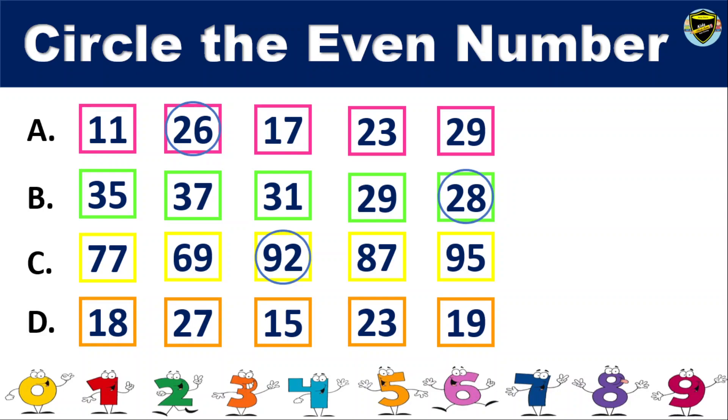D. 18, 27, 15, 23, 19. The even number is 18.